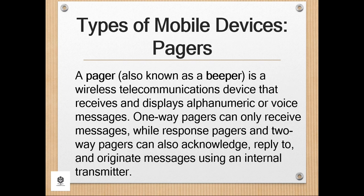Let's talk about the other types of mobile devices, in terms of pagers. A pager, also known as a beeper, is a wireless telecommunications device that receives and displays alphanumeric or voice messages. One-way pagers can only receive messages, while response pagers and two-way pagers can also acknowledge, reply to, and originate messages using an internal transmitter. Pagers operate as part of a paging system, which includes one or more fixed transmitters, or in the case of two-way pagers, one or more base stations, as well as a number of pagers carried by mobile users. These systems can range from a restaurant system with a single low-power transmitter to a nationwide system with thousands of high-power base stations.